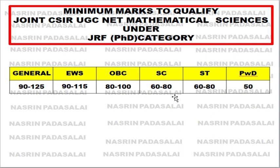Knowing this minimum mark has advantages both before and after writing the examination. Say you are writing the exam for a three-hour period and you finish within two hours. Once you know the minimum mark — for example, as a General category student you need 125 marks out of 200 — take your scribbling pad (the rough paper provided) and calculate your marks in the examination hall itself. Note down each question number and the marks for questions you attempted, since Part C carries 4 marks each, and keep adding them up.